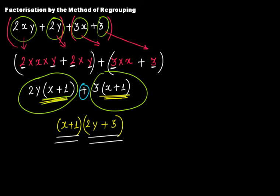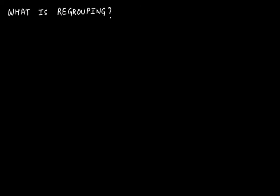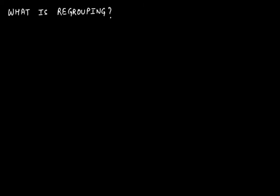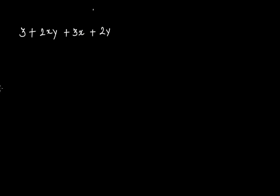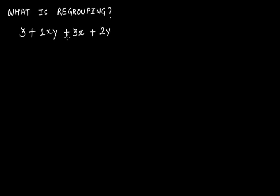The next question you should ask is: what is regrouping here — what have you regrouped? That's the right question. Because you haven't regrouped anything in the previous example. Suppose the same problem, 2xy plus 2y plus 3x plus 3, is given in a different order — now it's 3 plus 2xy plus 2y. Now you'll understand the importance of regrouping. It's the same problem, but we have changed the position of the terms.